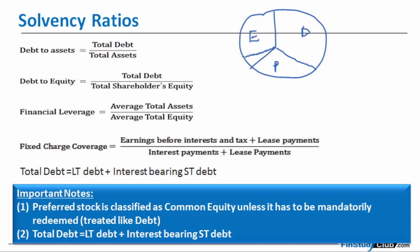Equity could be further divided into fresh equity and retained earnings, but I still like to call them equity. The solvency ratios are going to bisect and dissect each one in relation to the other. Basically, the numerator and denominator are going to be one of these things only. All put together is going to give you the total assets.